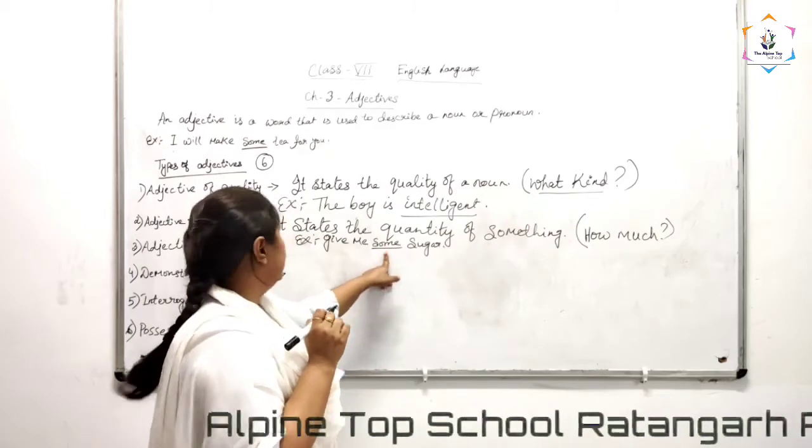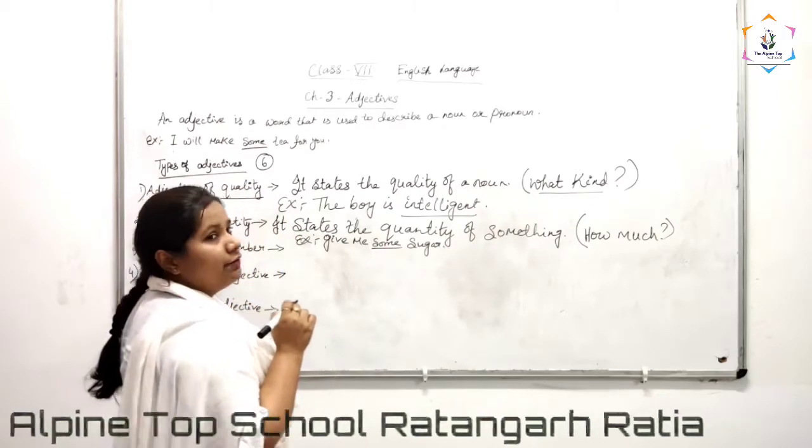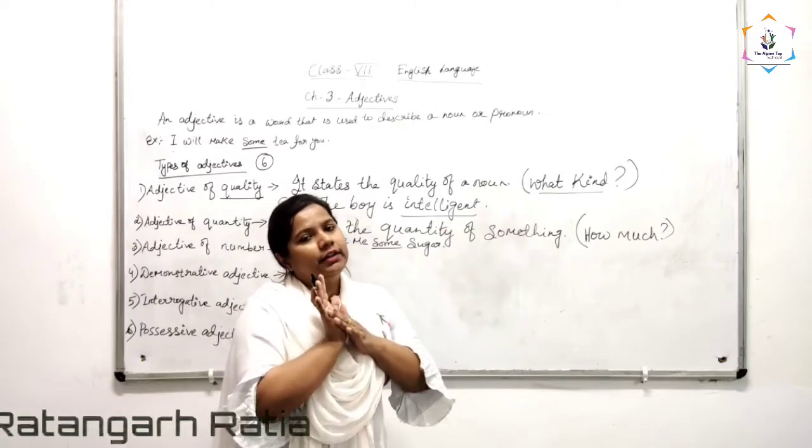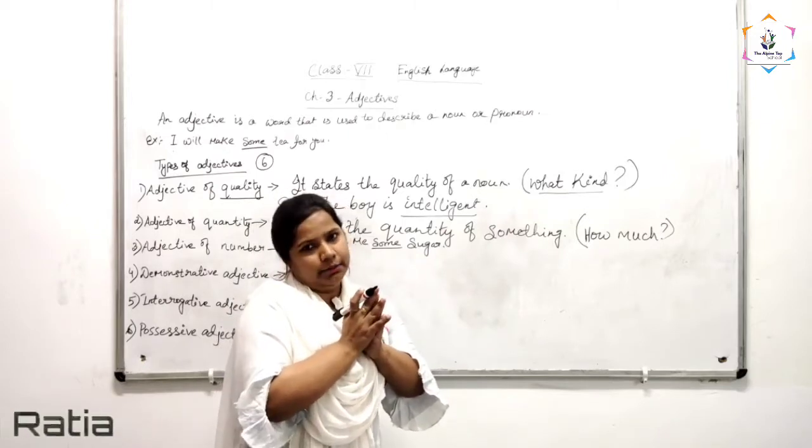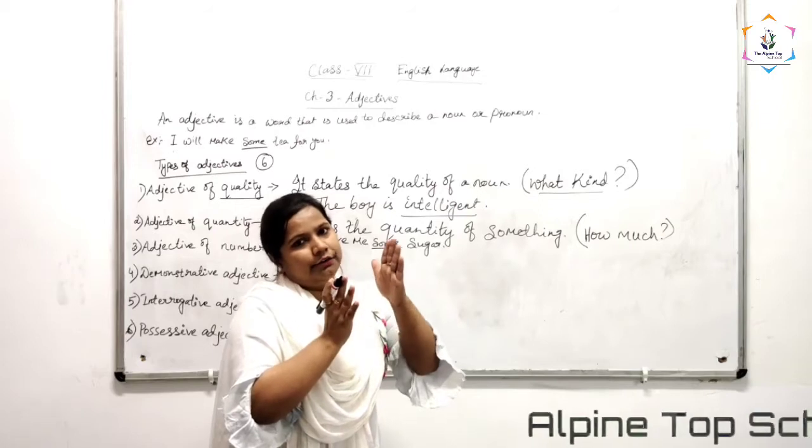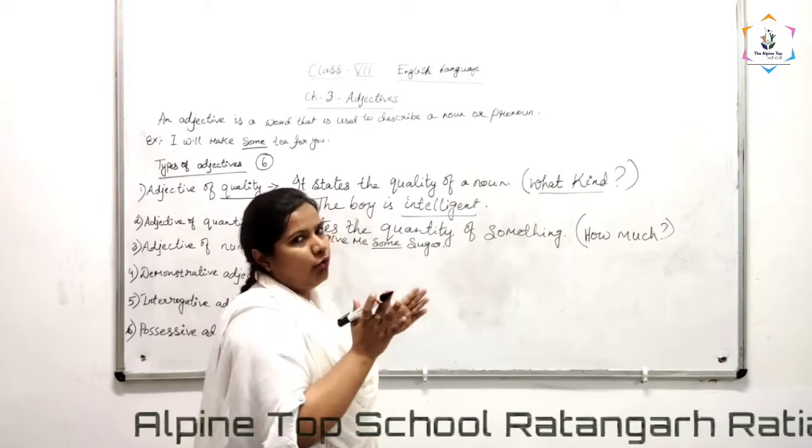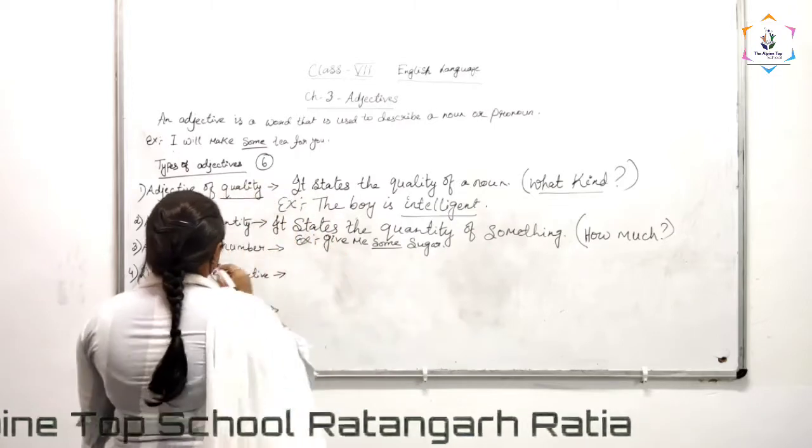Next you have adjective of number. Number means which you can count. It can be your ordinal number or cardinal number. Ordinal is first, second, third and cardinal is one, two, three, four which we count.